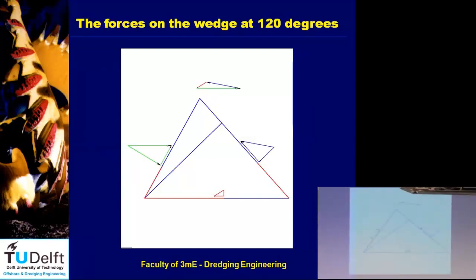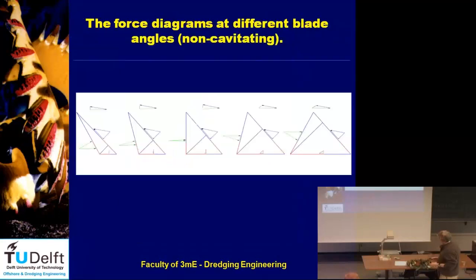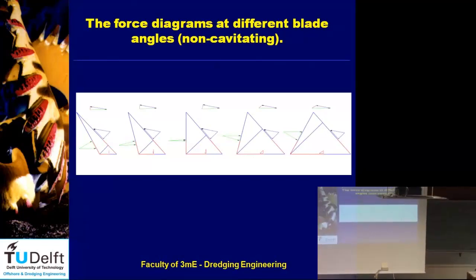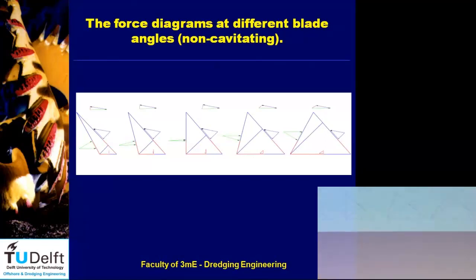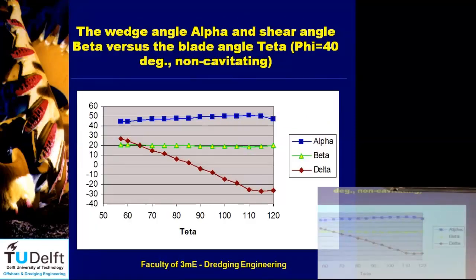Oil companies take this very seriously: if a pipeline in the Arctic is damaged by an iceberg, public opinion worldwide would be against them and it would take ten years before drilling could restart. A student used a software called Abacus for those calculations. Here you see the same picture for blade angles of 60, 75, 90, 105, and 130 degrees — the forces on the wedge are always the same, but the friction force on the blade transitions from pushing sand downwards to pushing it upwards.